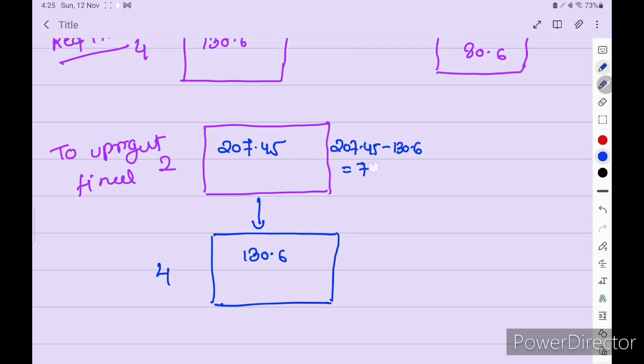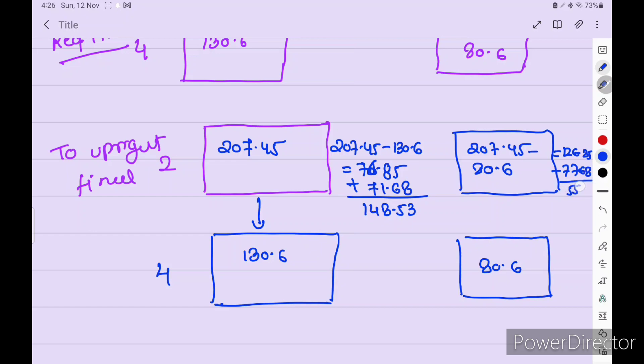So 207.45 minus 130.6, so remaining 76.85. Plus 71.68 equals 148.53. Starboard side initially was 207.45, so here 80.63 comes. 207 minus 80.6 equals 126.85, minus 71.68 equals 55.17.